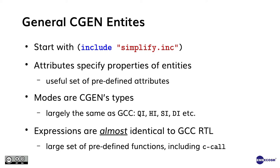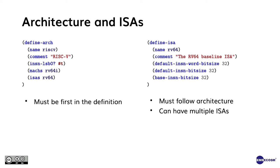There is a C call operation to call out to C code from anything which is too complex for RTL. The first item in your CGEN definition must be the architecture. For the architecture, we define the name — in this case RISC-V — a comment for generated documentation, a flag to indicate whether bit zero is the least significant bit (for RISC-V it is), and the machines and ISAs used for this architecture. At this stage, we are just building the base 64-bit RISC-V and its instruction set.